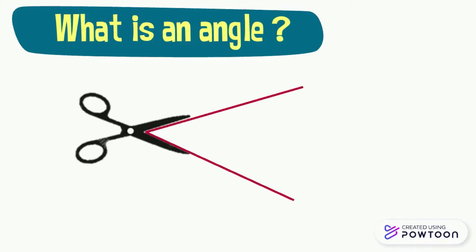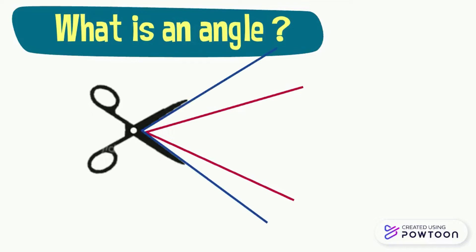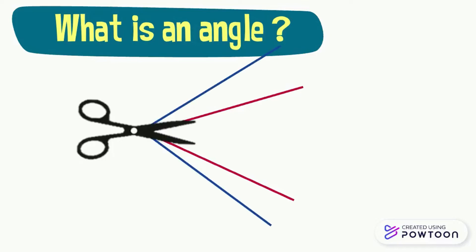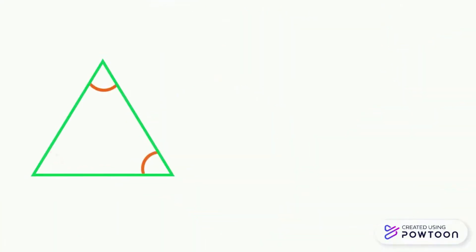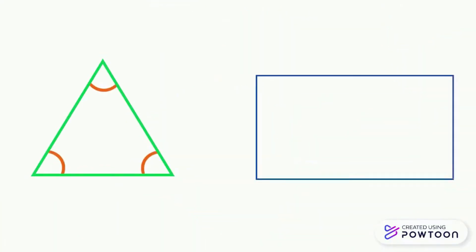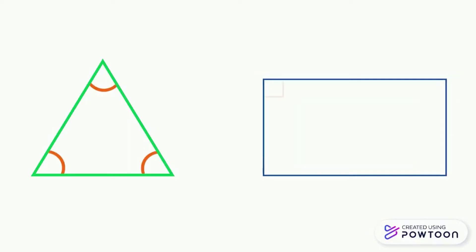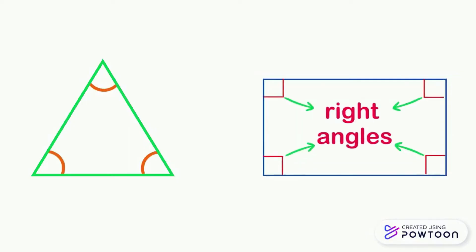The more you open the scissors, the greater the angle is. The more you close the scissors, the angle will be smaller. In a triangle, there are three angles. In a rectangle, there are four angles. These angles are called right angles.